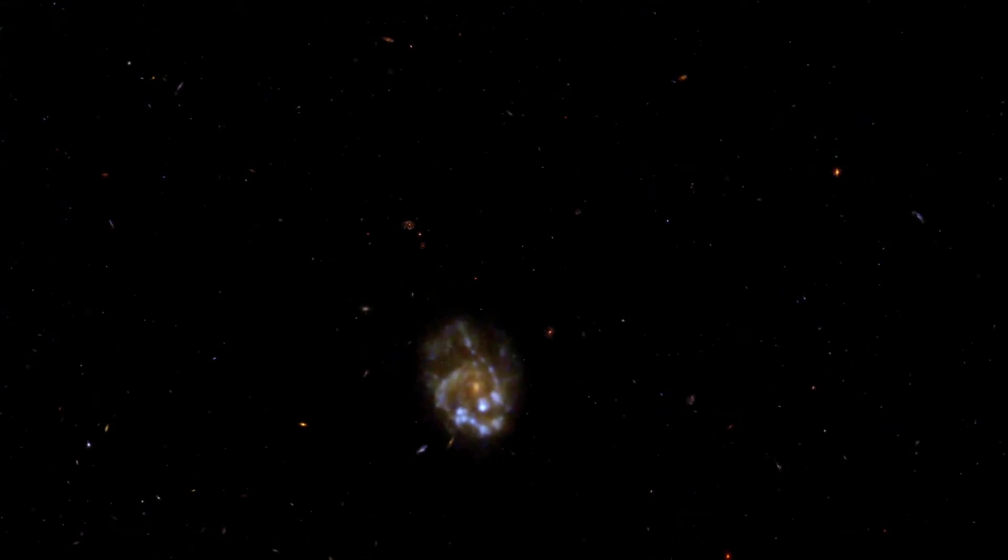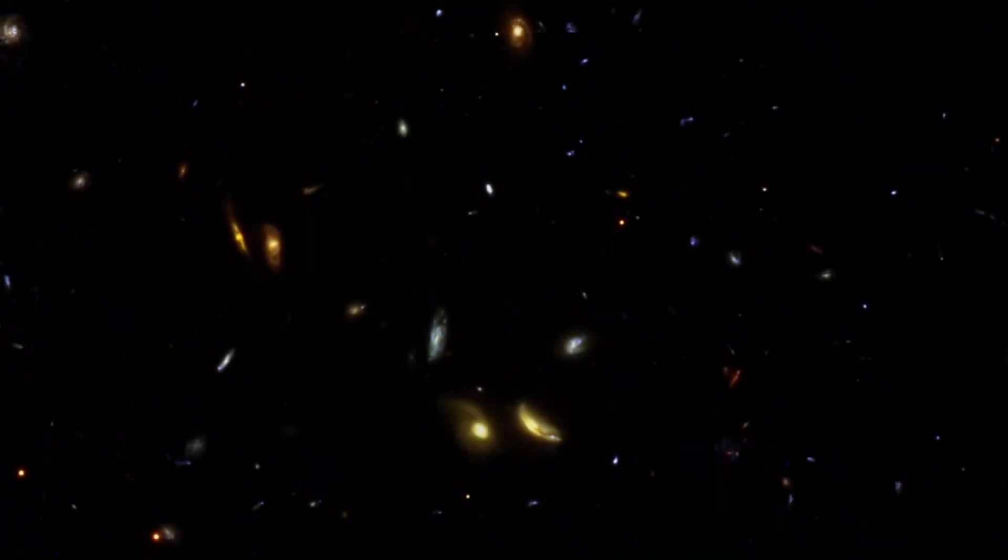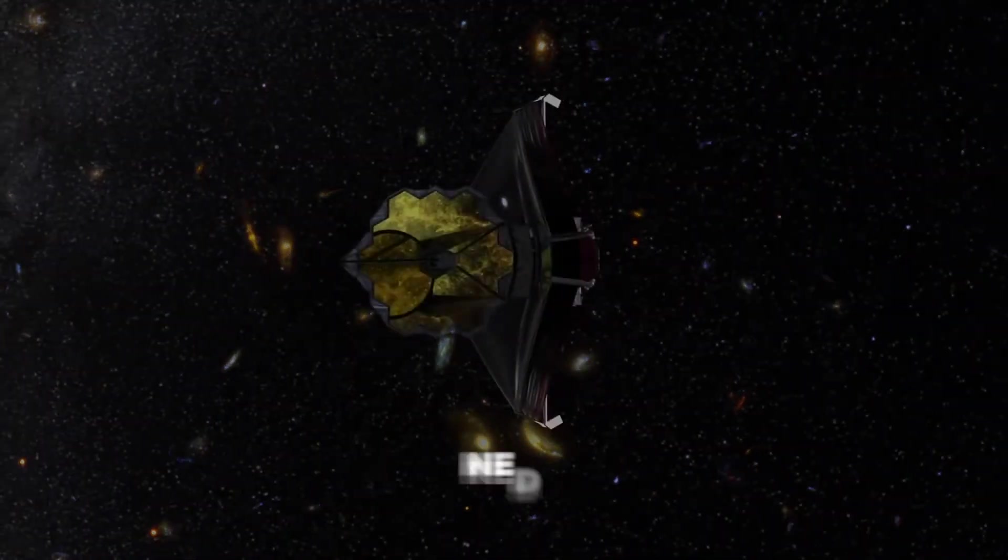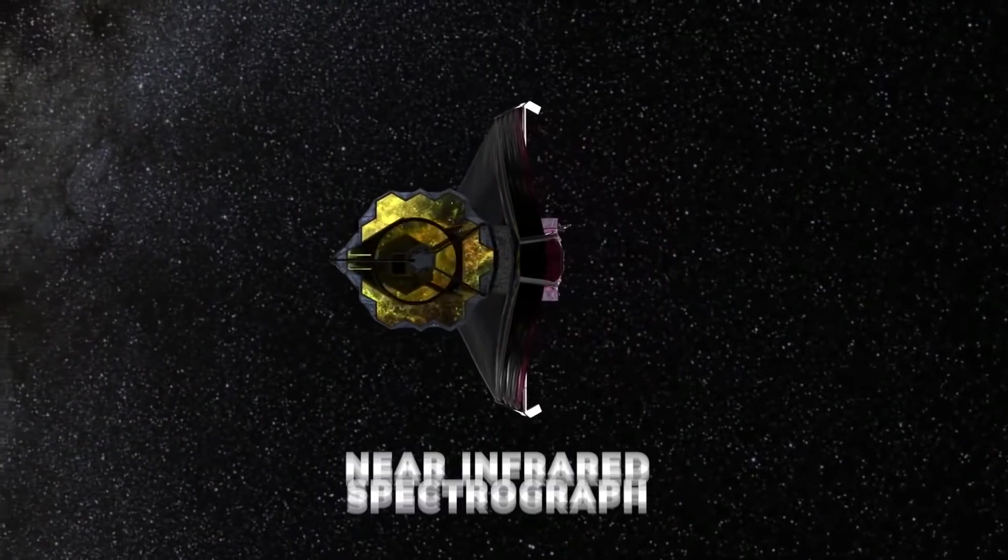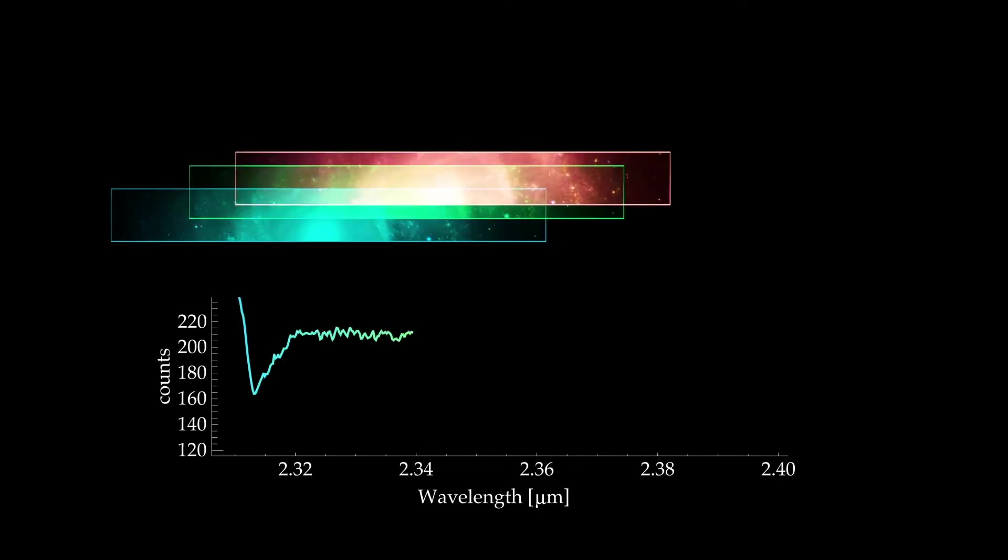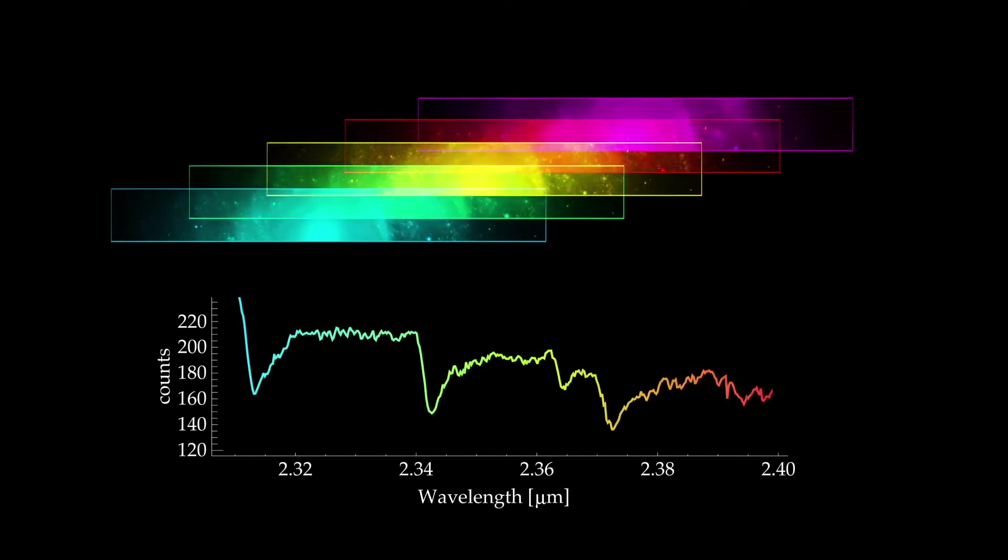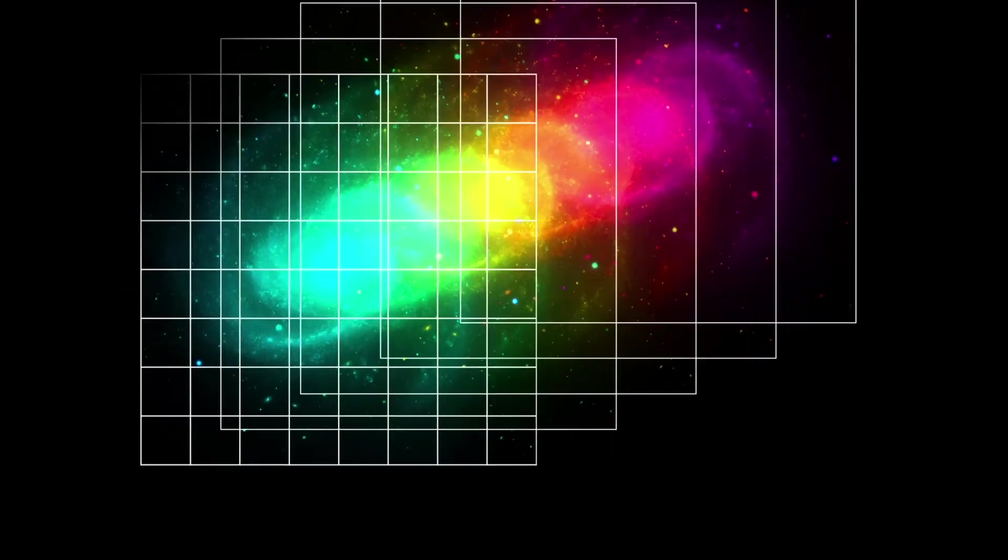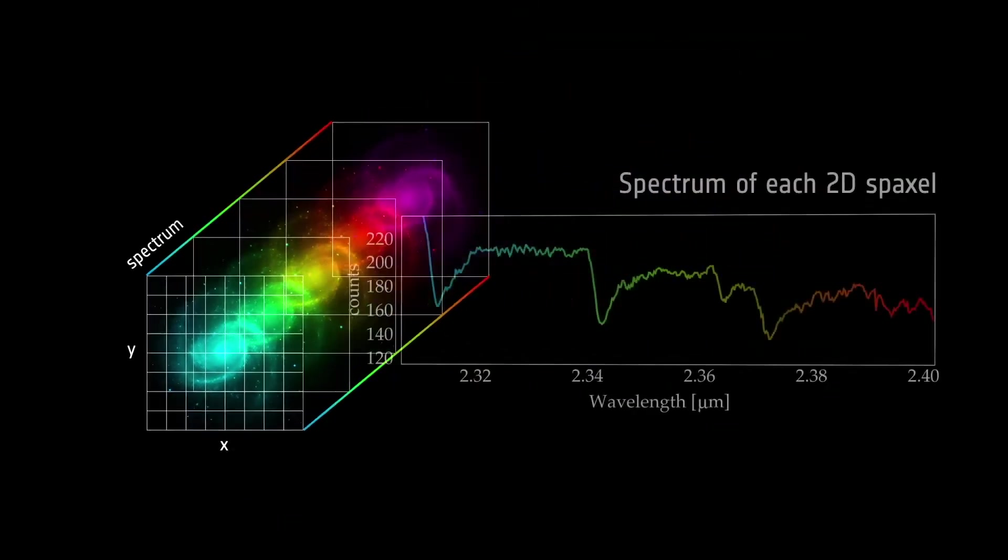But this team is not the only one looking to learn more about the first galaxies of the universe. Another team of astronomers is using JWST's near-infrared spectrograph to understand more about these. The spectrograph measures light's intensity over a range of different wavelengths, allowing researchers to see much more than what our eyes could normally pick up.